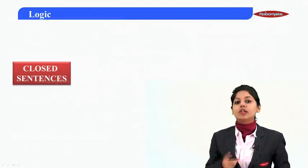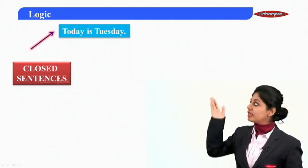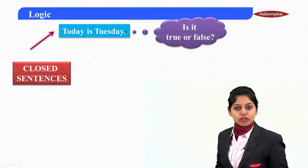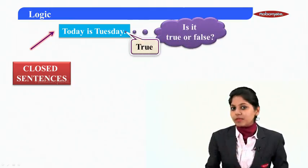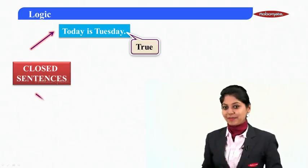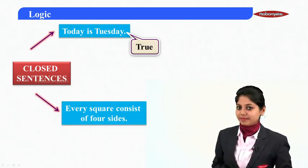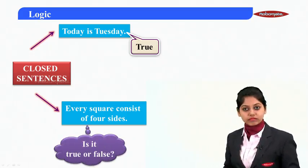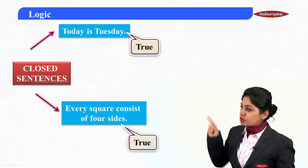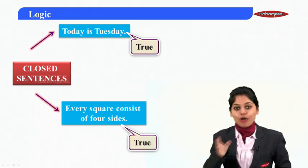Now you've understood closed and open sentences. Let's look at more examples of closed sentences. For example, 'Today is Tuesday.' If I ask you, is it true or false? Yes, if it's Tuesday today, it is a true sentence. Another example: 'Every square consists of four sides.' Is it true or false? Mathematically, it's true. Both of these are closed sentences because they have a truth value of either true or false.